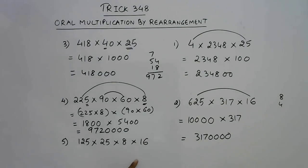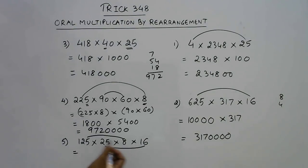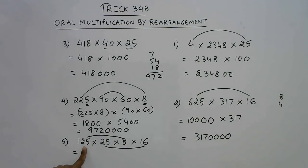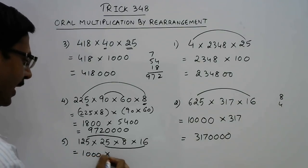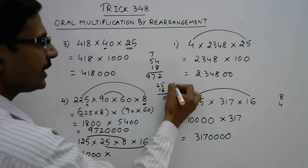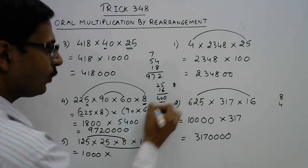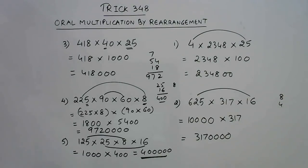For the final example, 125 and 8, and 25 and 16 are the obvious combinations. For 125 into 8: multiplying by 2 three times — 125 doubled is 250, 250 doubled is 500, 500 doubled is 1000. So 125 into 8 is 1000. For 25 into 16: 16 fives are 80, carry 8; 16 twos are 32 plus 8 is 40 — so 25 into 16 is 400. The final answer is 4 followed by five zeros: 400,000.